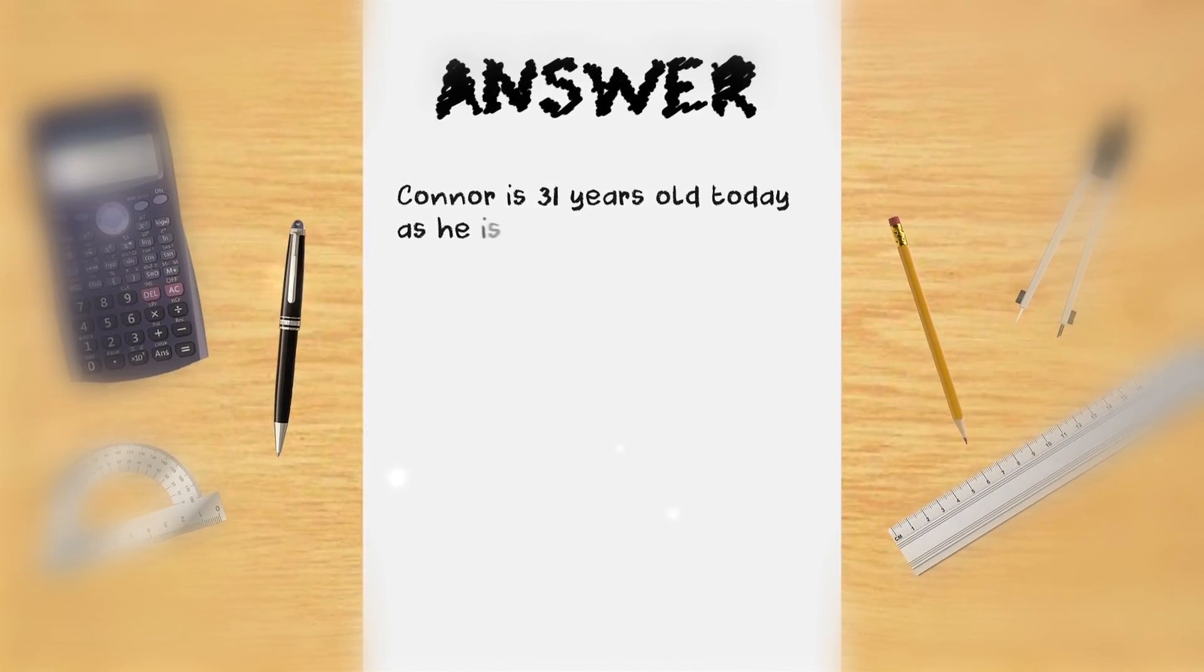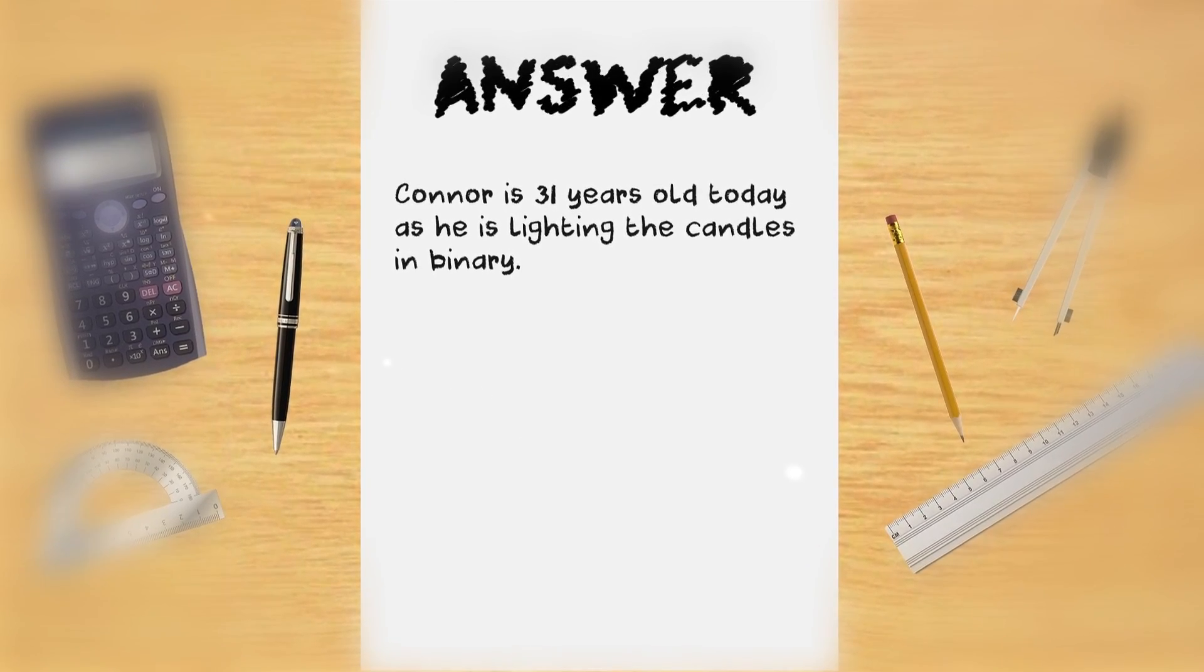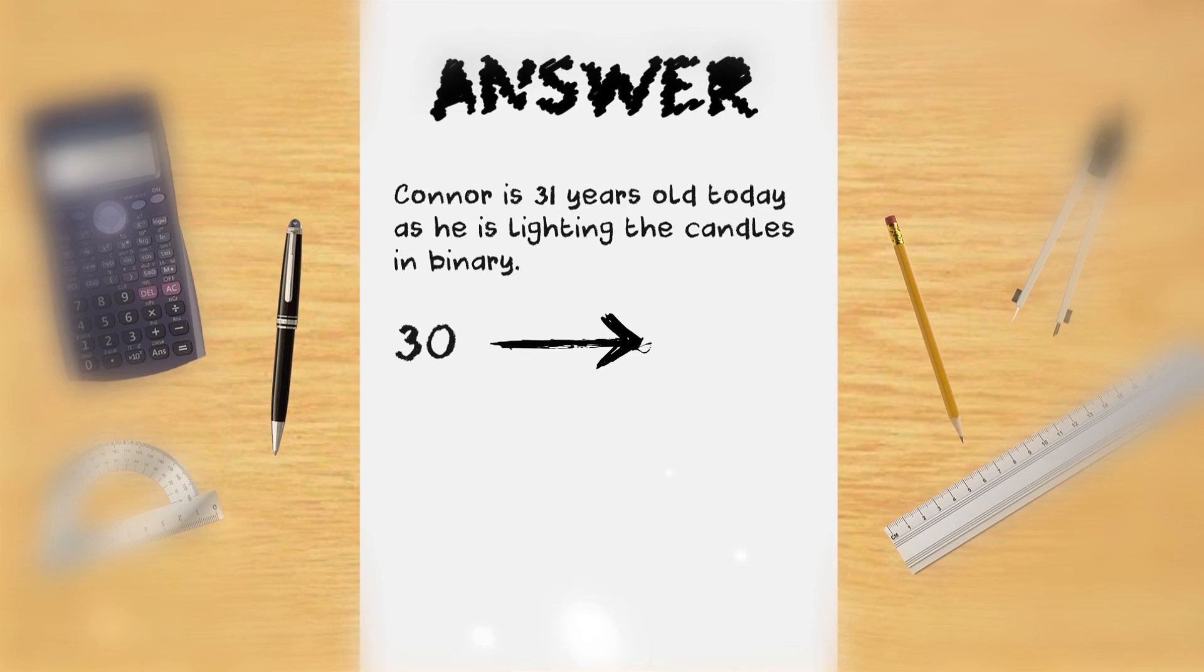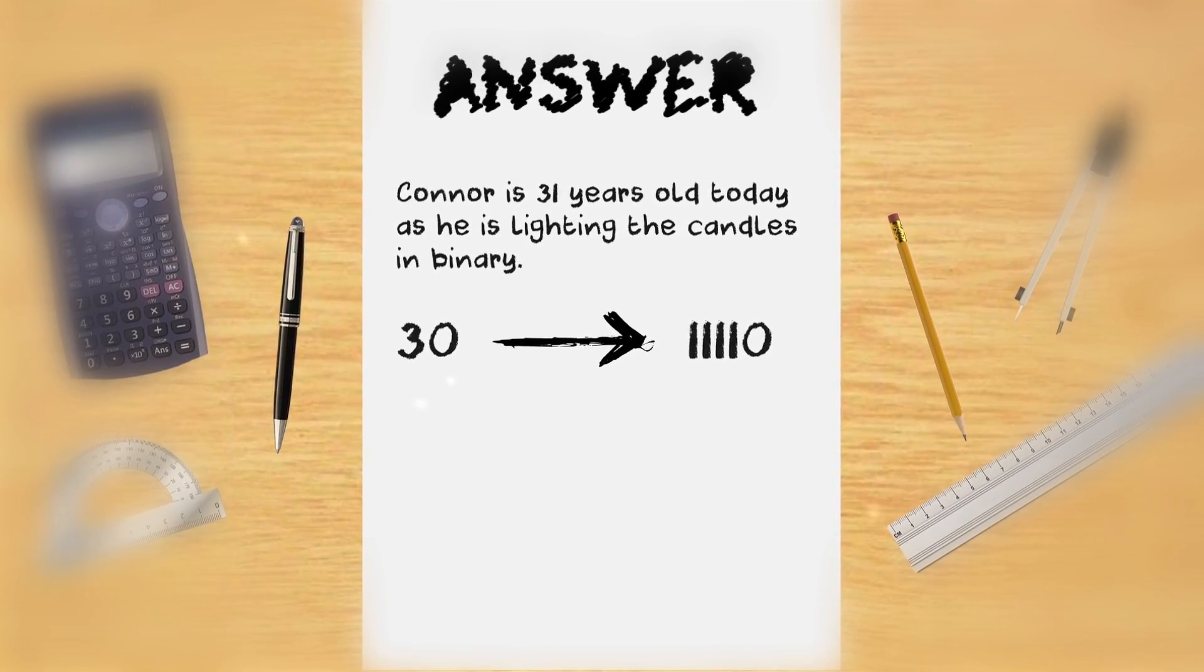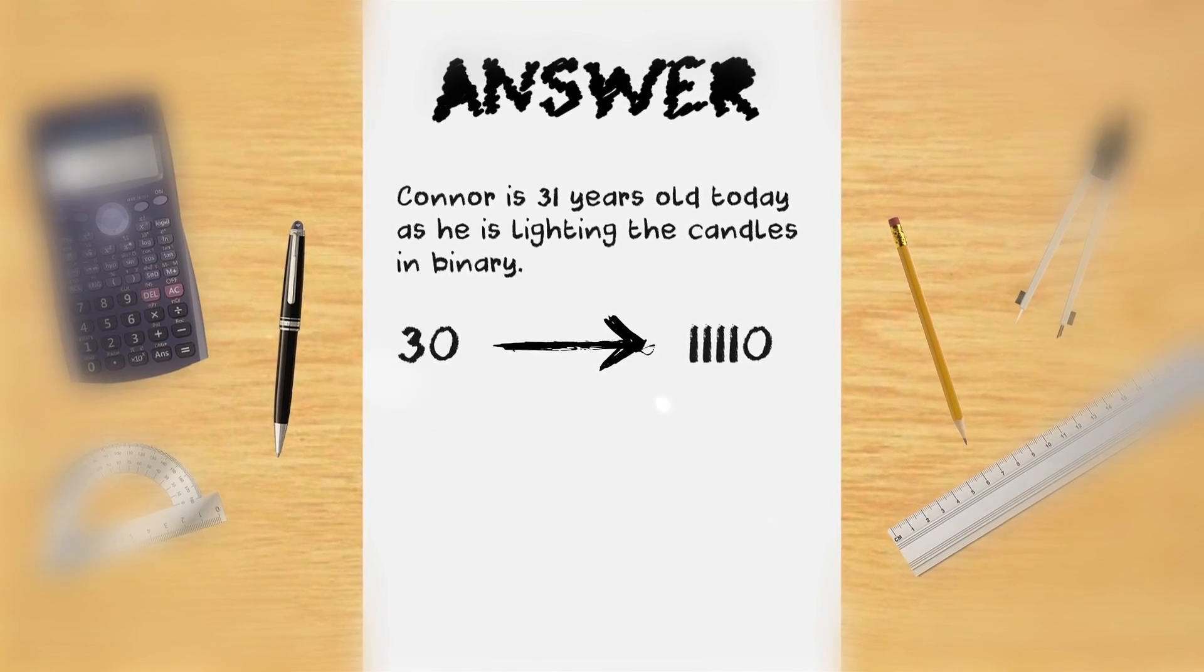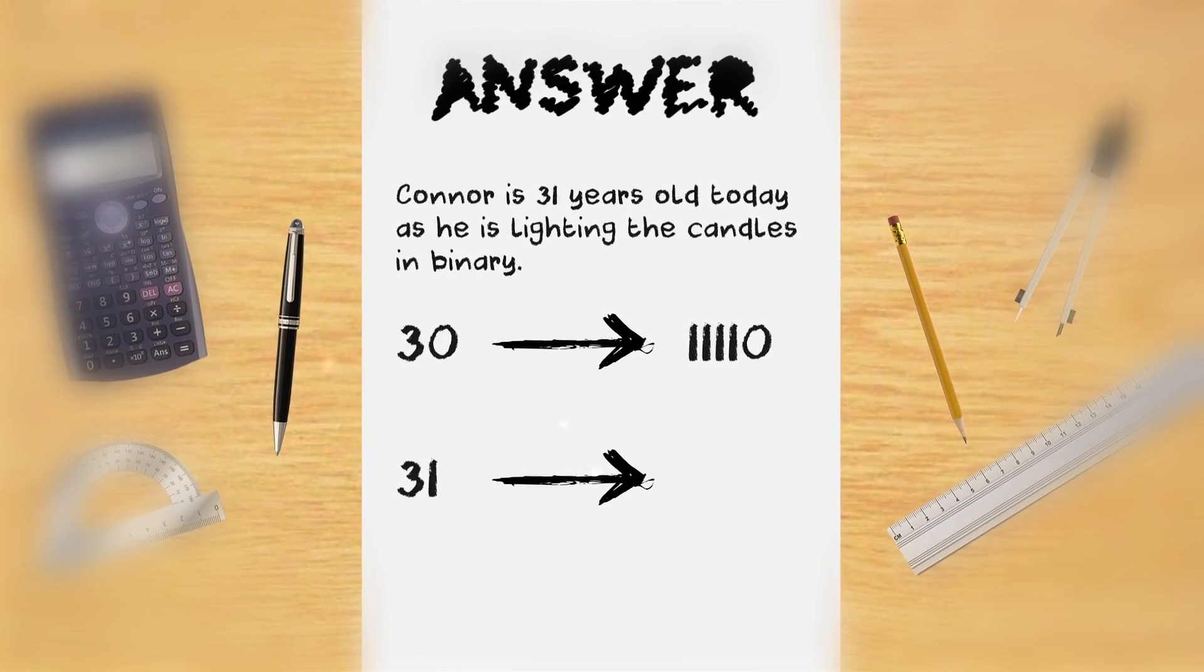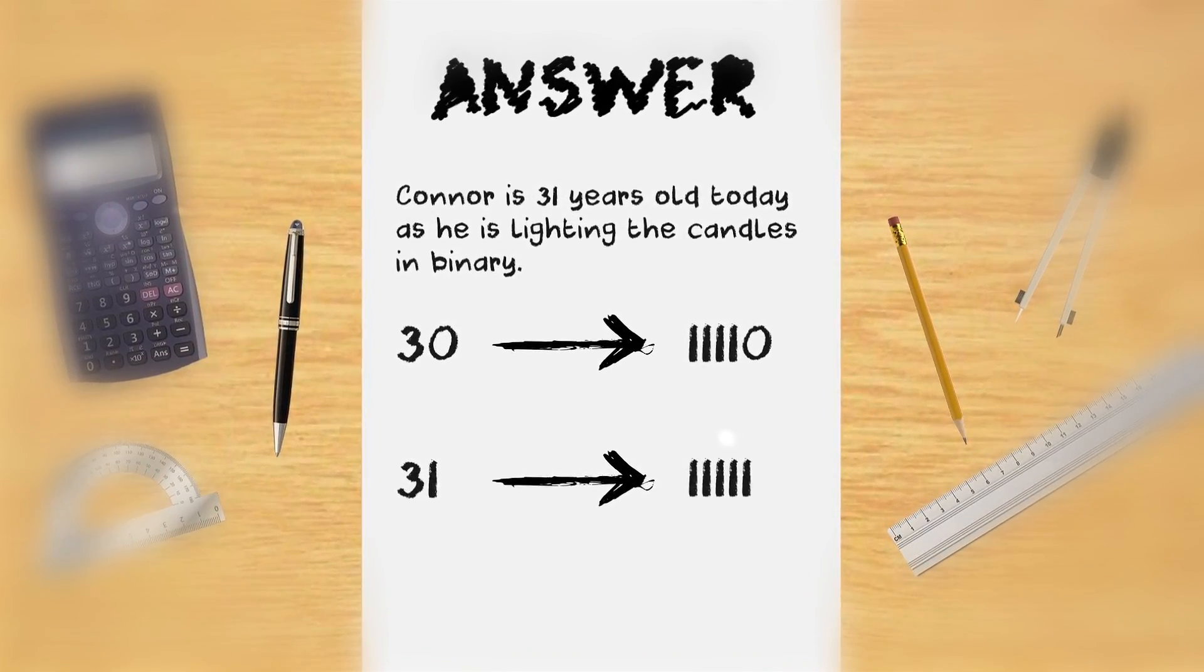Answer. Connor is 31 years old today as he is lighting the candles in binary. If you convert the number 30 into binary, you will get 11110 which is why Connor lit all the candles except the last one a year ago. However, the number 31 in binary is 11111. Hence, Connor lights all the candles this time.